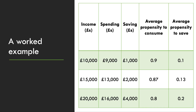Looking back at our data on income: at £10,000 of income we're spending 90%, so APC is 0.9 and APS is 0.1. When income rises to £15,000, we're spending just under 90% — 87% of our income — and saving 13%. When income rises to £20,000, we're spending 80% of our income, so APC is 0.8 and APS is 0.2.